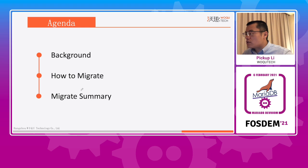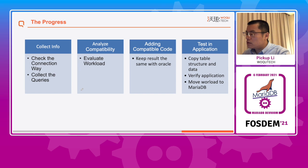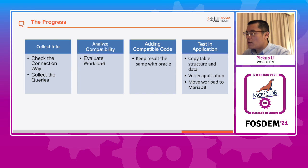Let's summarize the whole migration process. We sort out the migration steps as follows. The first stage: collect application information — including how the application connects to the database. If a customer uses OCI to connect to Oracle, unfortunately we must rewrite code to use the MariaDB driver. Also collect customer metadata information, DML SQL, and query latency. The second stage: analyze and evaluate application compatibility — evaluate the workload of modifying MariaDB and determine which syntax, functions, and database features need to be adapted. The third stage: modify MariaDB to ensure that all query results to the application are consistent with Oracle. This stage is generally the most time-consuming and most challenging work for database developers.